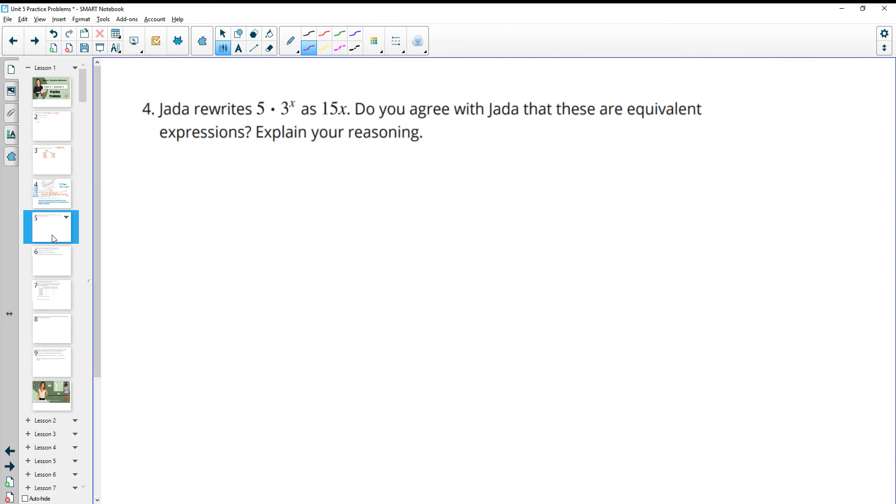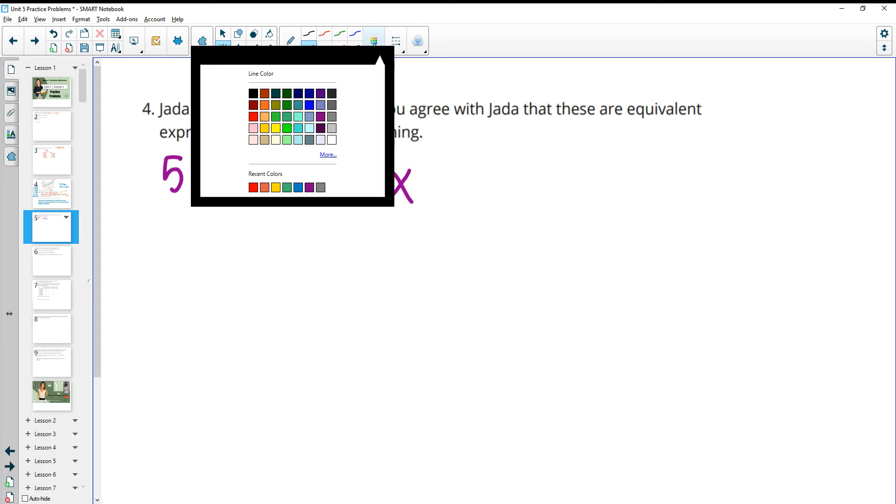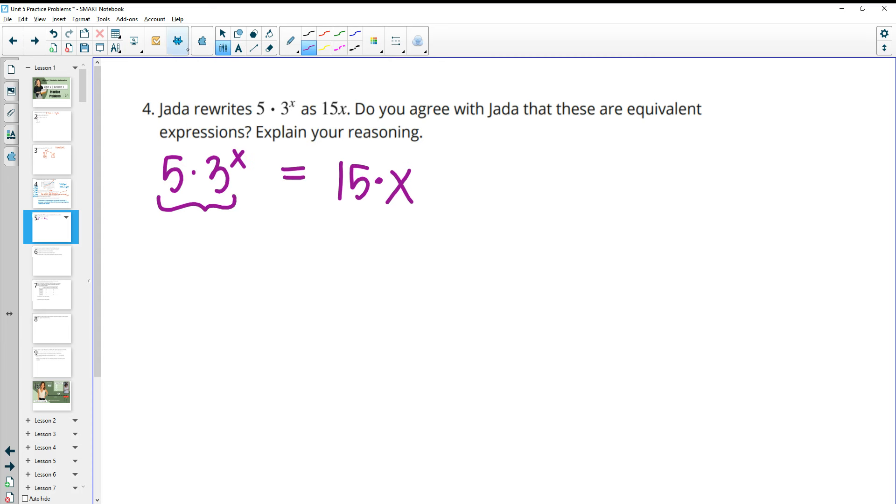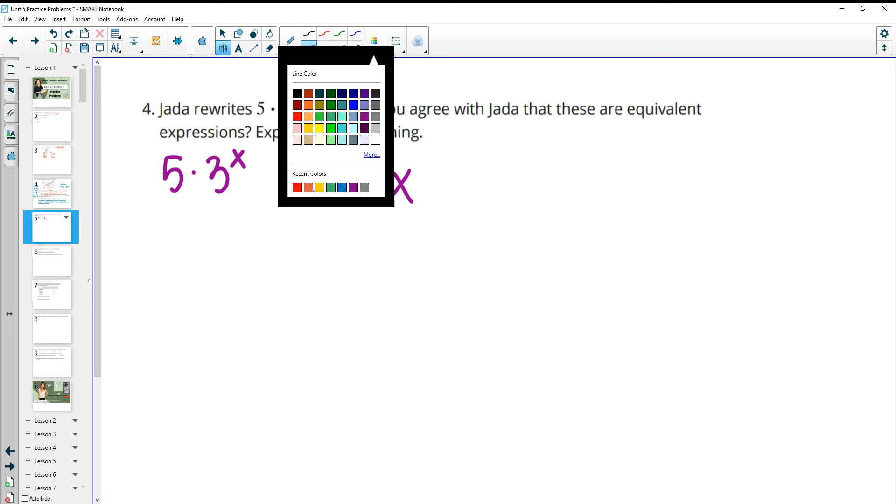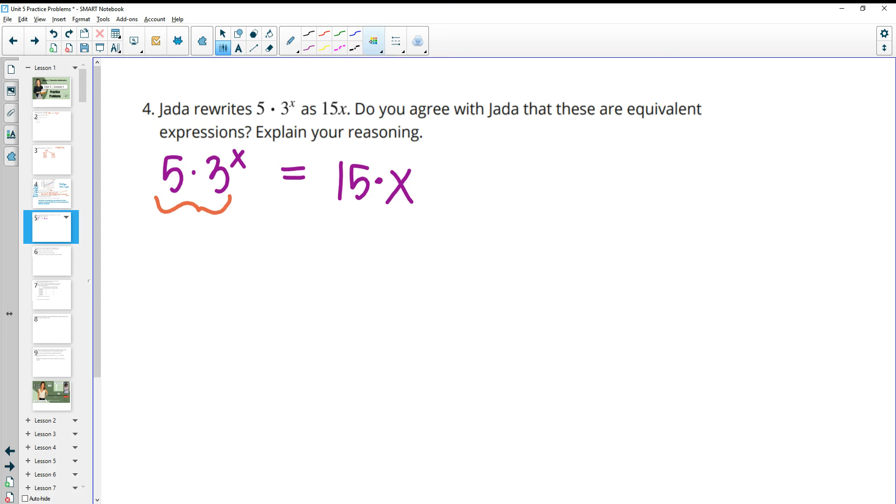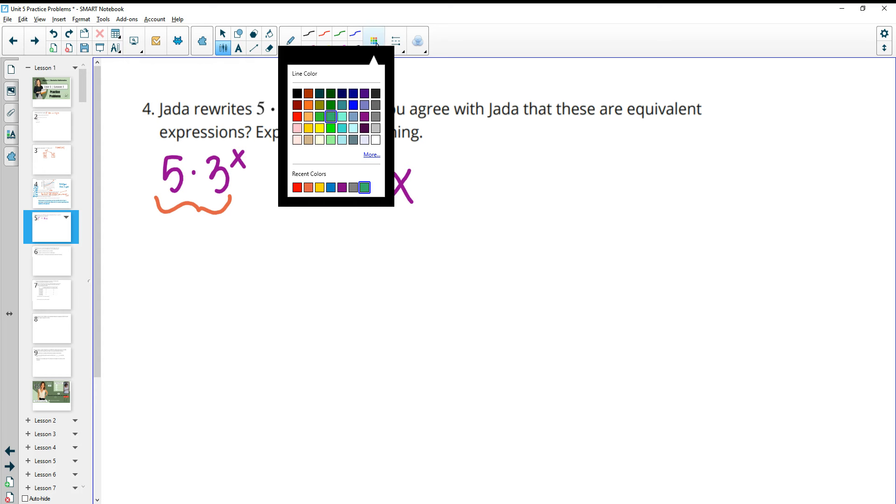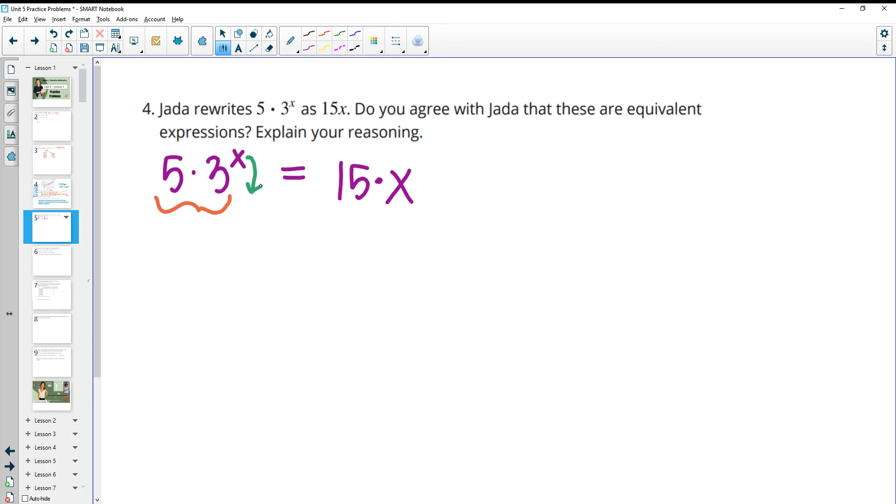Number 4, Jada writes the expression 5 times 3 to the x as 15 times x. Do you agree with Jada that these are equivalent or no? So she has 5 times 3 to the x equals 15 times x. So what she did here is multiplied these two numbers together, right? So she multiplied the 5 and the 3 together. And not only that, but she also brought the exponent down to just be multiplied by the number.